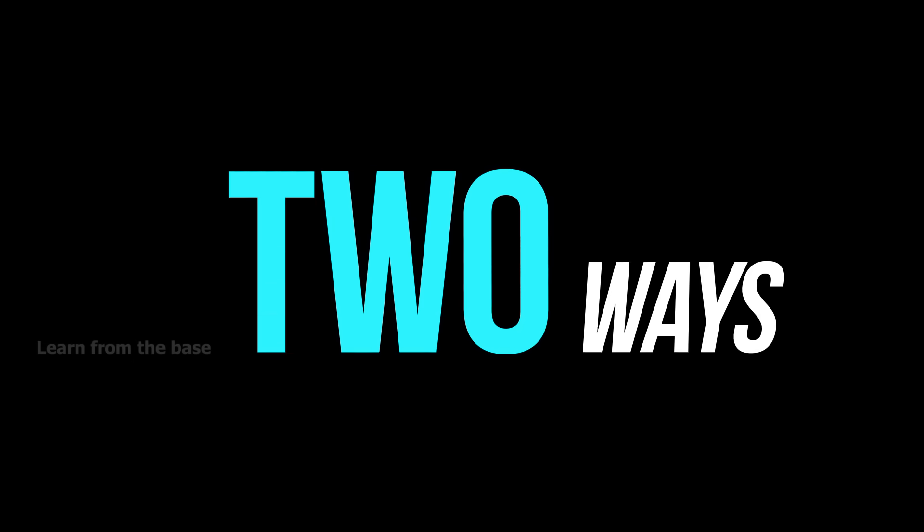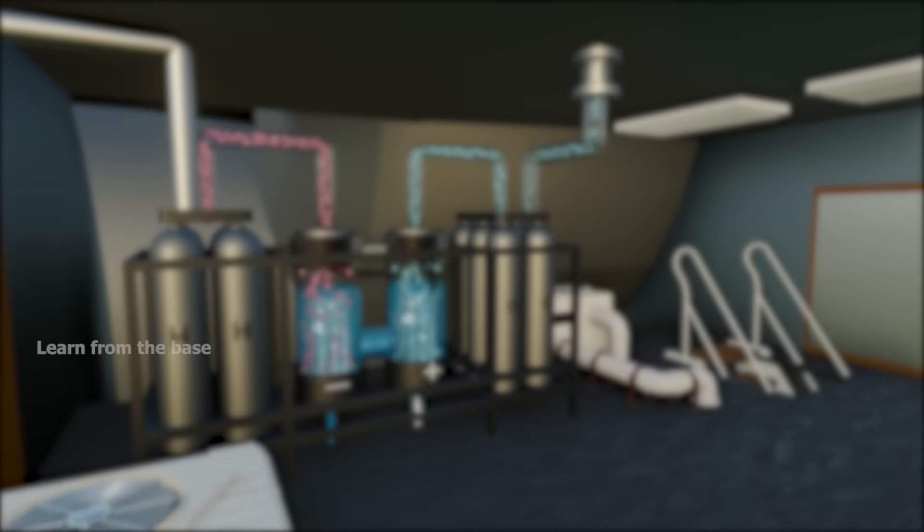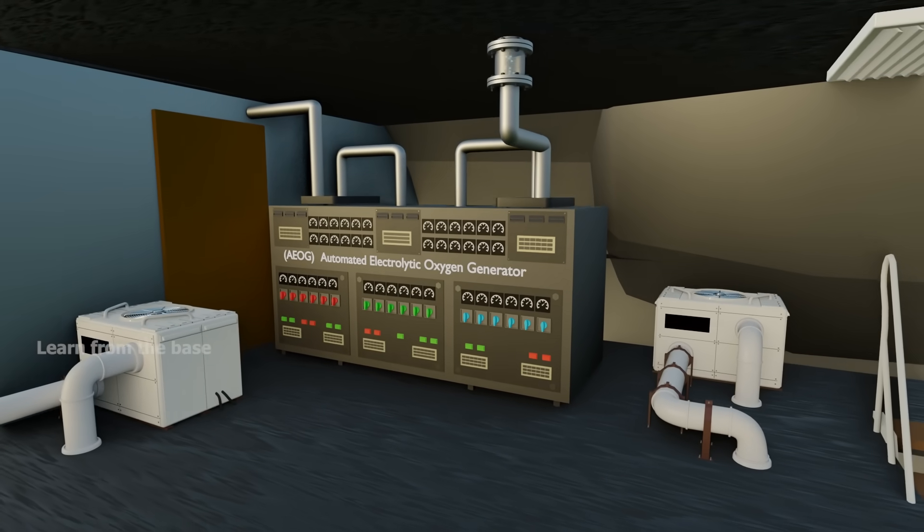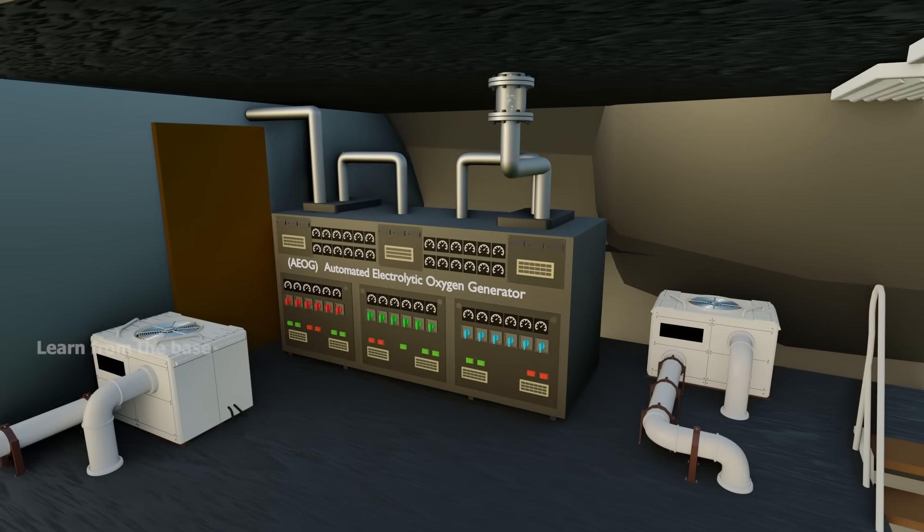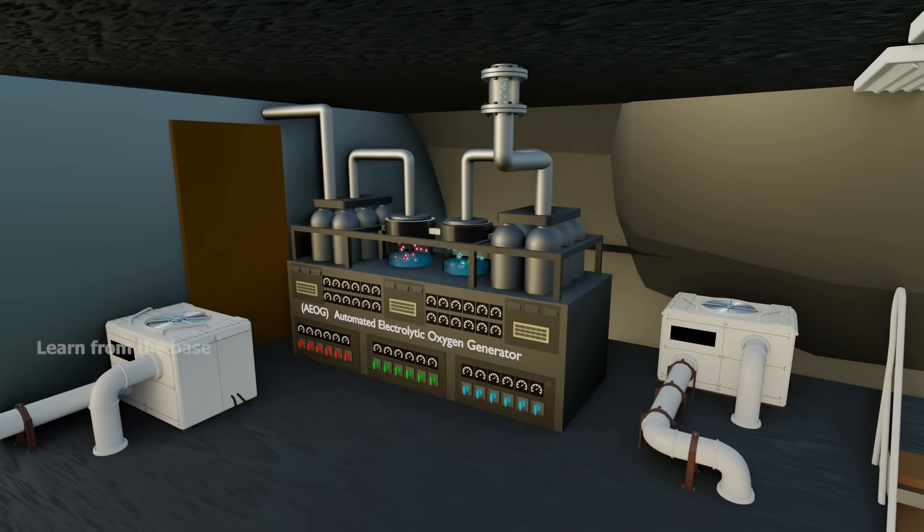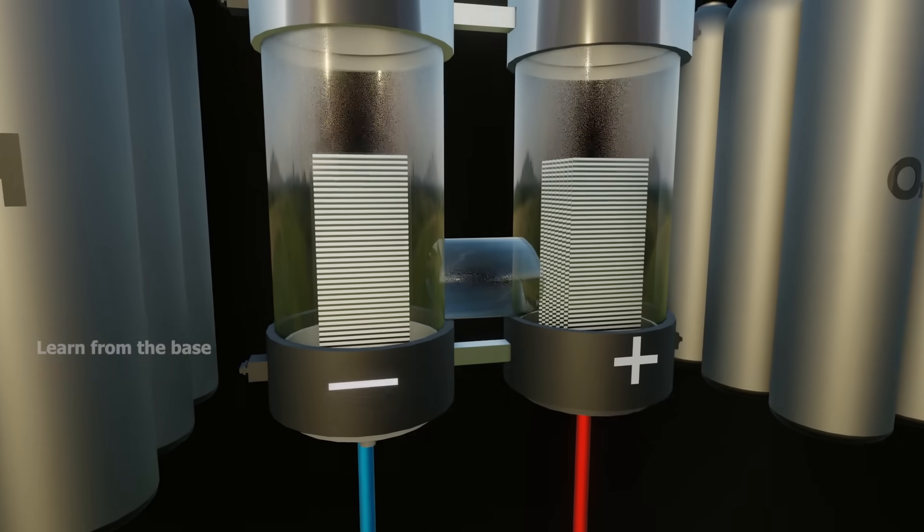There are two ways to create oxygen. The first one is electrolysis. This is the machine that creates oxygen called an automated electrolytic oxygen generator, or AEOG. This apparatus contains positive and negative electrodes.